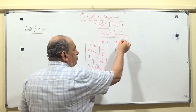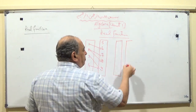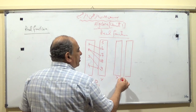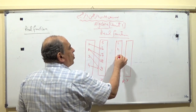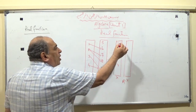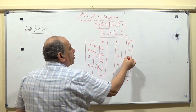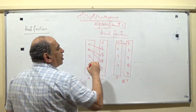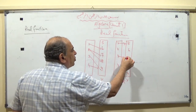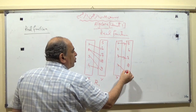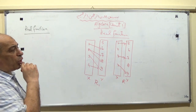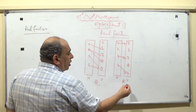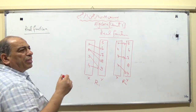Another relation, R2: X has elements 1, 2, 3, 4 and Y has elements 5, 6, 7, 8, 9. Here, 1 maps to 5, 3 maps to 7, 4 maps to 9. We note that element 2 has no image. Therefore relation R2 is also not a function.